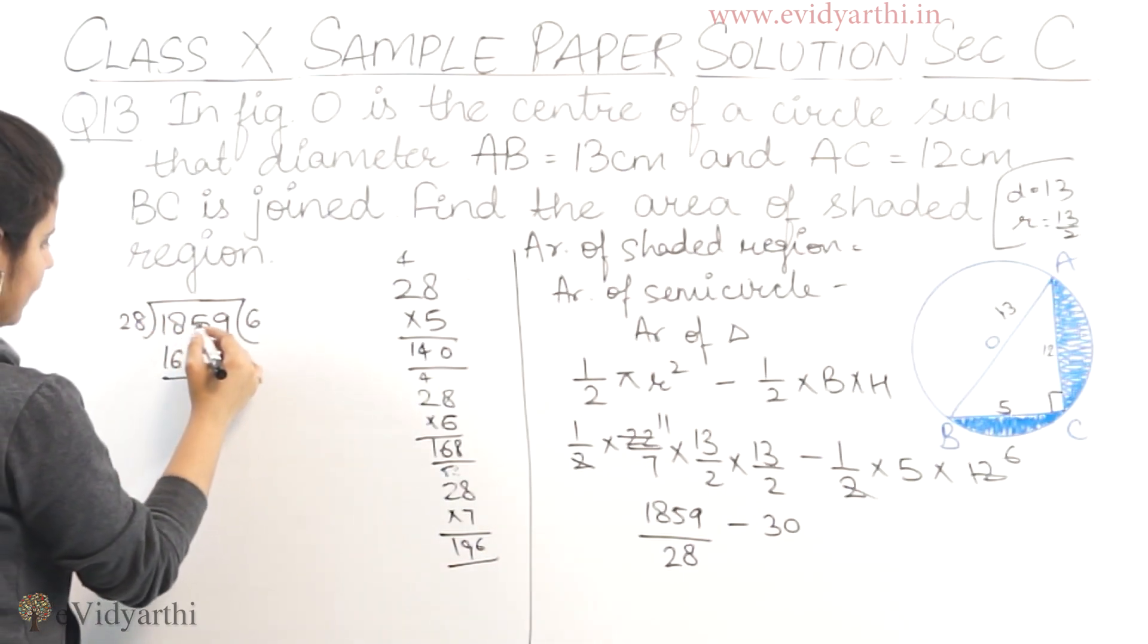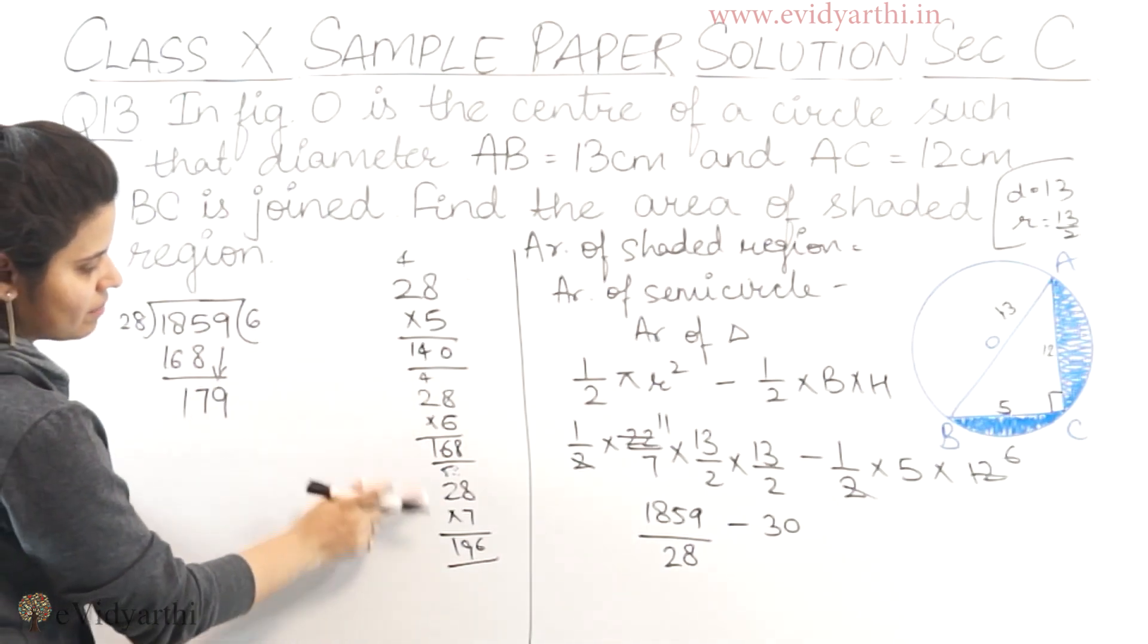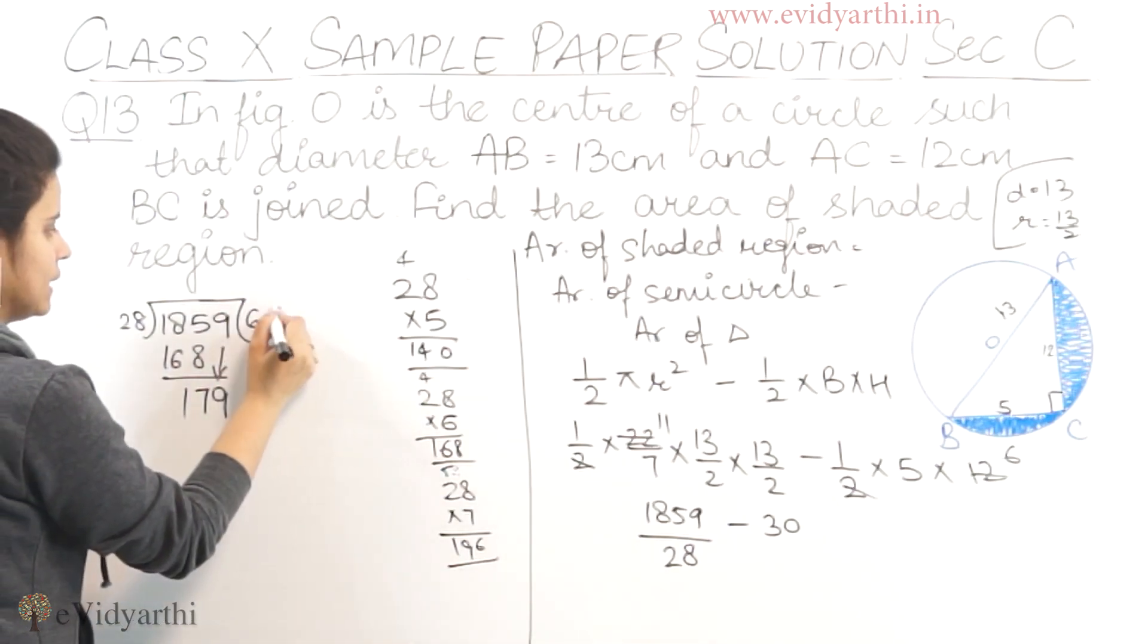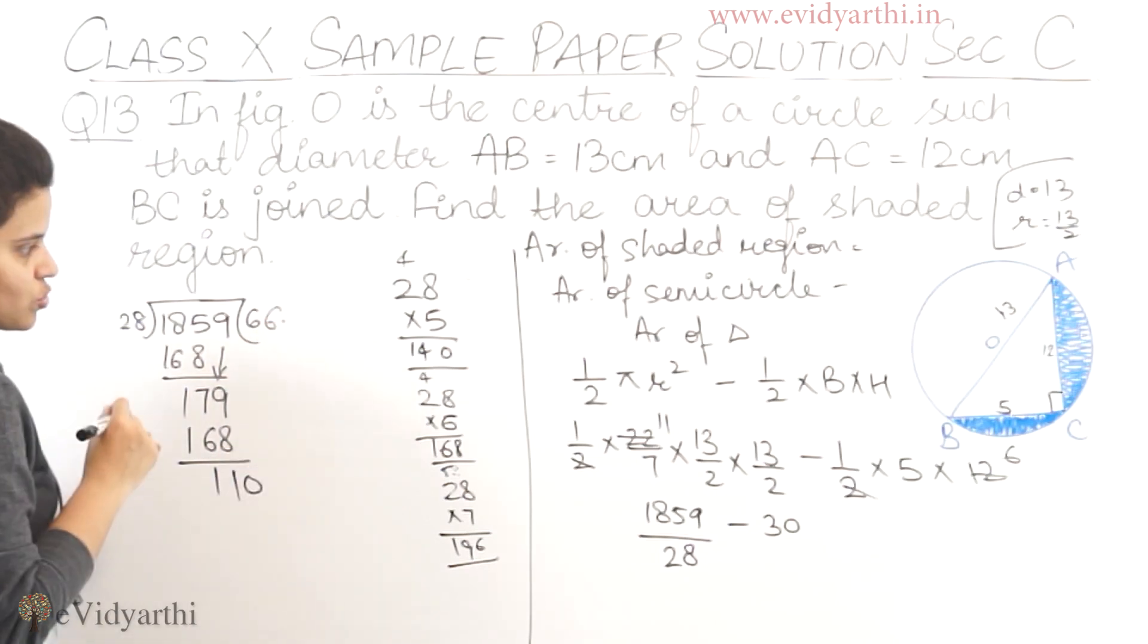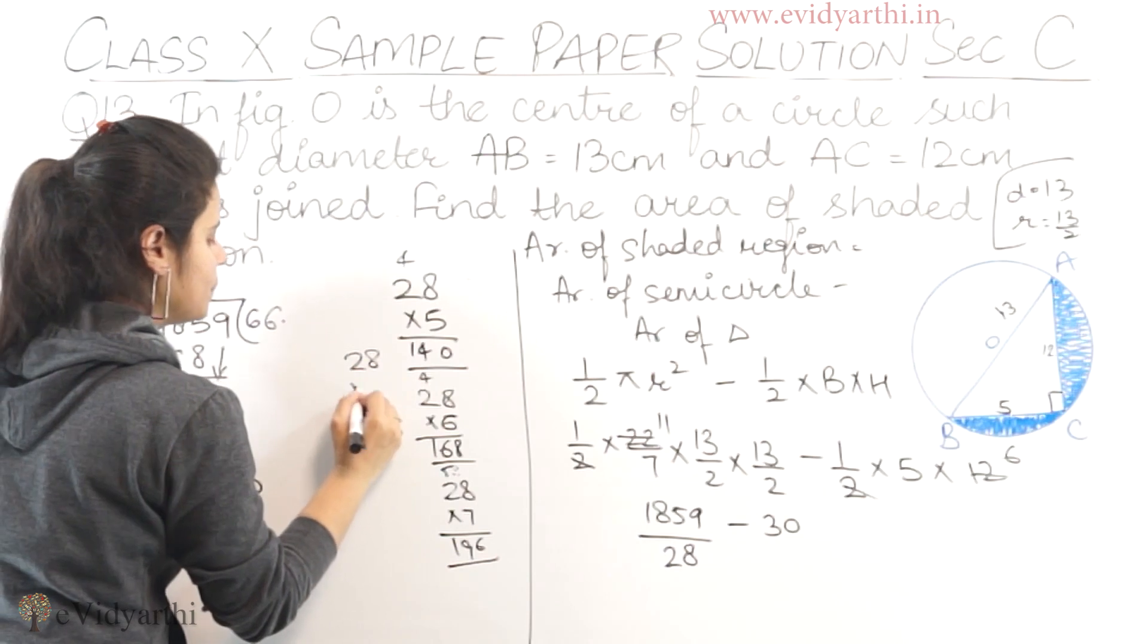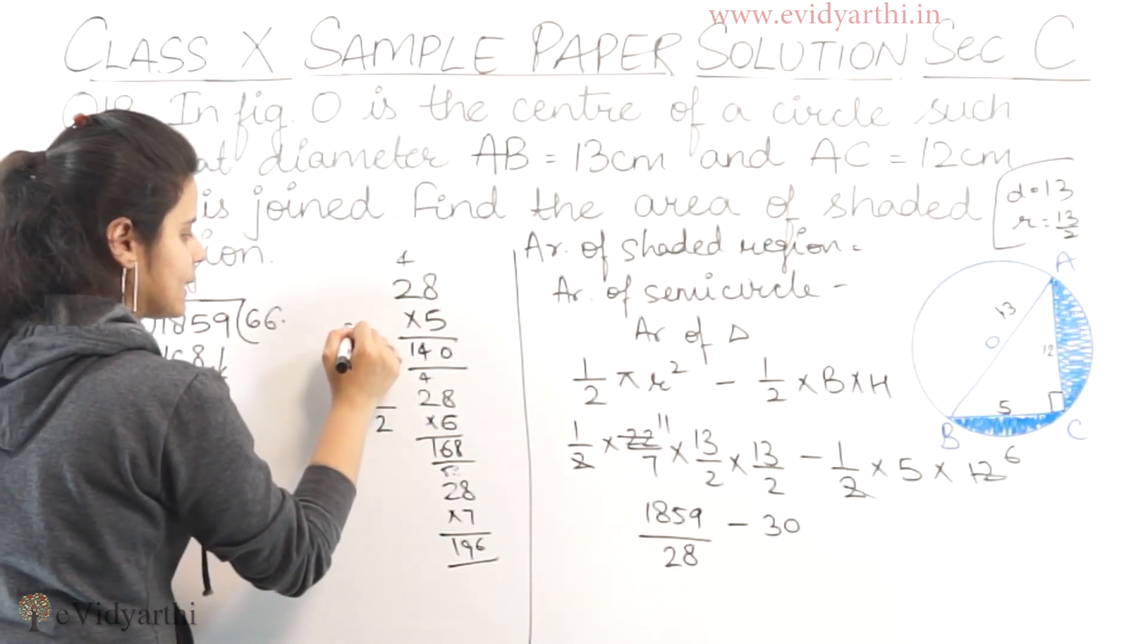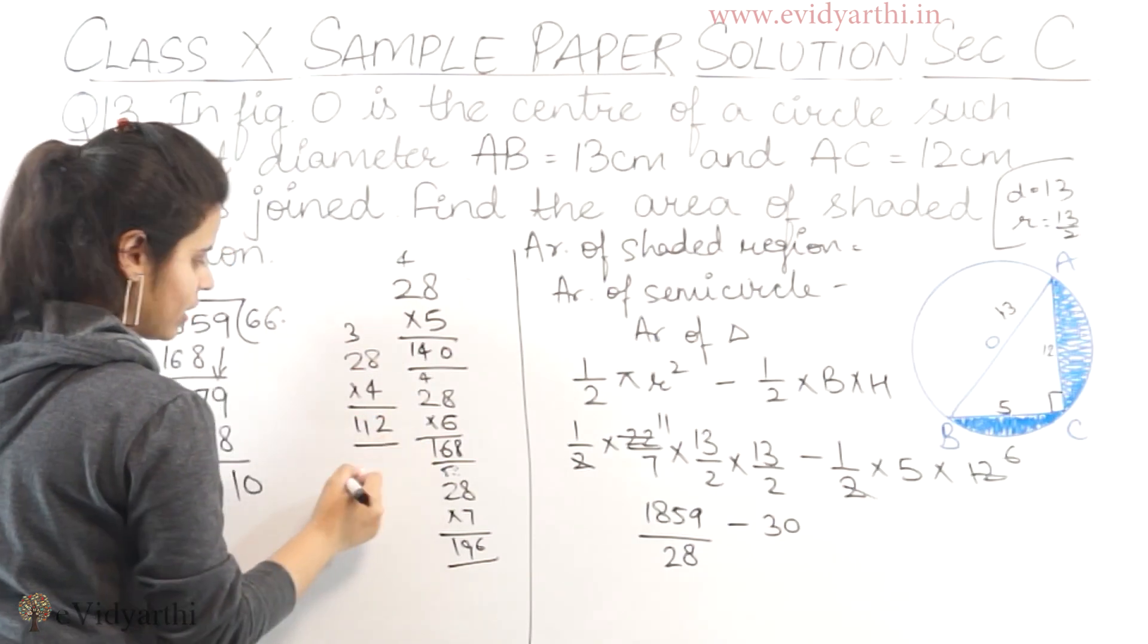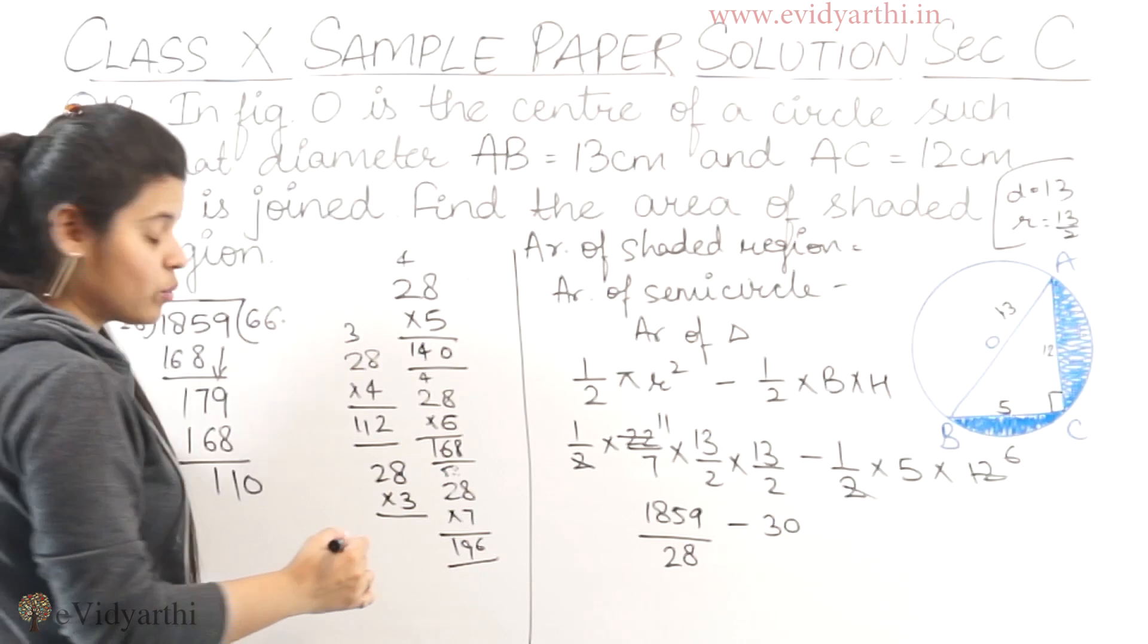Continuing with 179, we use 6 again to get 168. Subtracting gives us remainder 11. Adding decimal point, we continue the division process.